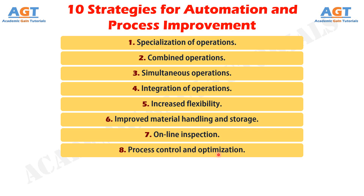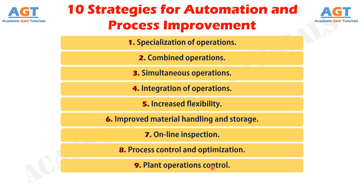Strategy No. 9: Plant Operations Control. Whereas the previous strategy is concerned with the control of individual manufacturing processes, this strategy is concerned with control at the plant level. It attempts to manage and coordinate the aggregate operations in the plant more efficiently, and its implementation involves a high level of computer networking within the factory.